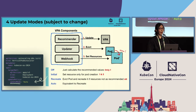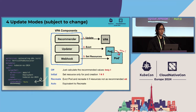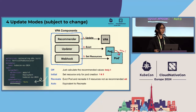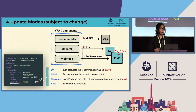Let's move on to VPA's update modes. There are three distinct modes to apply recommendations to pods. Off mode is a hands-off approach — it calculates recommendations but does not make any changes to the pod. This mode is great for those who want to make manual adjustments. Next is Initial mode, which applies the recommendation only at pod creation time. This mainly comes into play when you are changing the replica count.